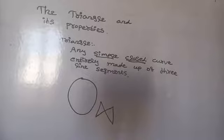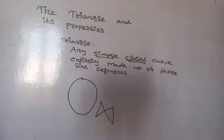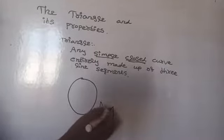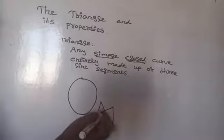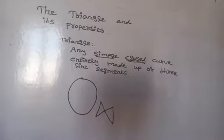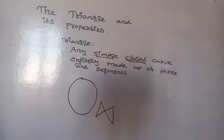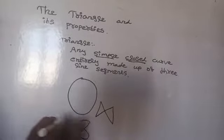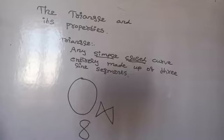What is meant by simple? A simple curve is one that does not cross itself anywhere. If a curve crosses itself somewhere, like the figure eight, it is not a simple closed curve.